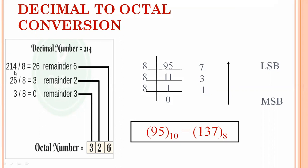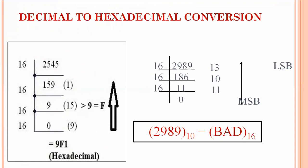Similarly, 214 in decimal converts to 326 in octal. For decimal to hexadecimal conversion, consider 2452: dividing repeatedly and recording remainders gives values including 15, which is represented as F since it is greater than 9. So 2452 in decimal converts to 9F1 in hexadecimal. Another example: 2989 converted to hexadecimal gives remainders 13, 10, and 11, which correspond to D, A, and B, so the result is BAD in hex.